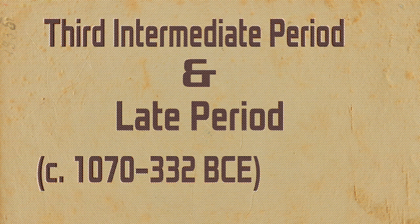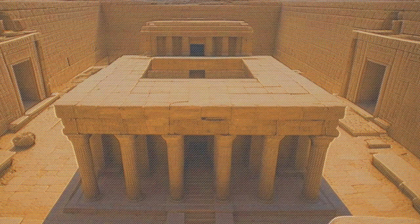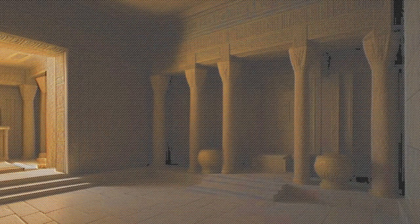During the Third Intermediate and Late Periods, Egypt witnessed a decline in monumental tomb construction. However, elite individuals continued to be buried in decorated tombs, albeit on a smaller scale, reflecting the changing political and social landscape of the time.